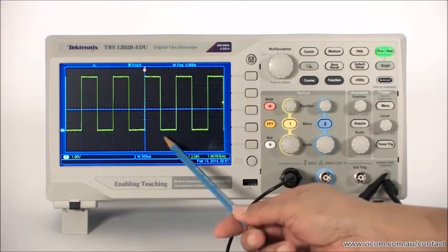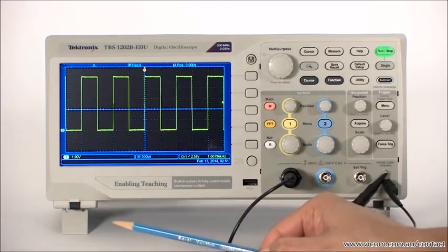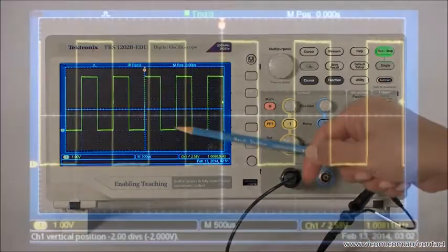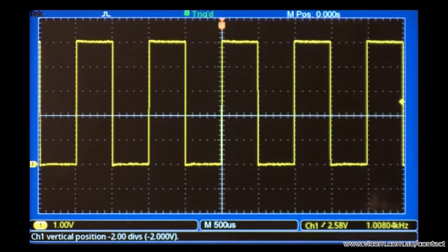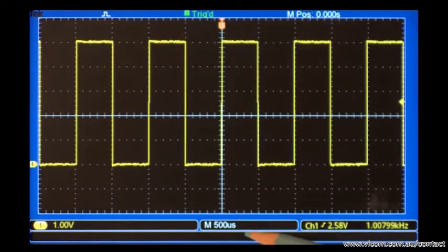You can quickly check timing relationships and voltage values just by looking at the screen. Based on the scale settings, each horizontal division represents 500 microseconds.